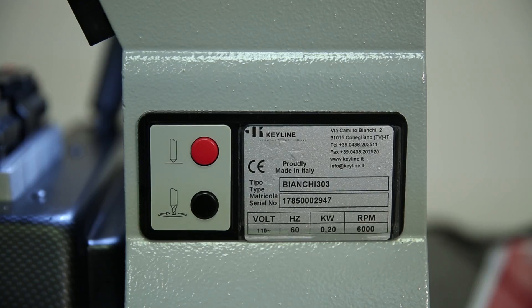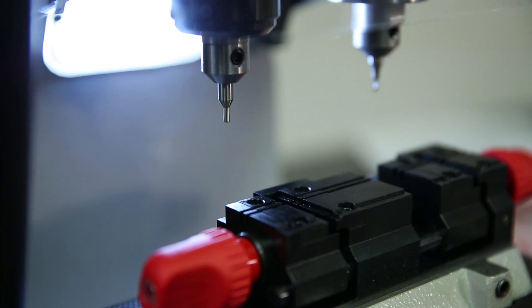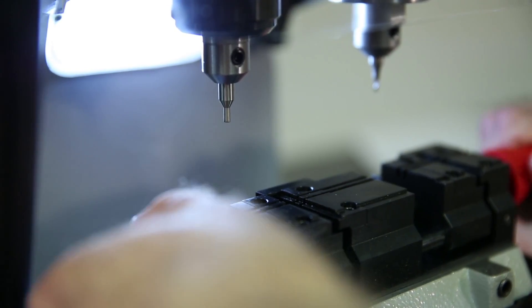Always begin by hitting the red button on the side of the machine to activate the calibration mode. Then, fully tighten both the left and right jaws.